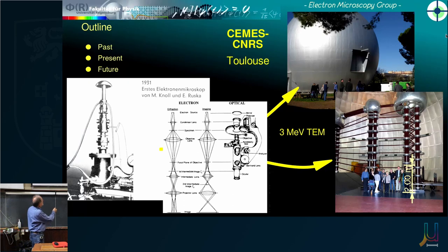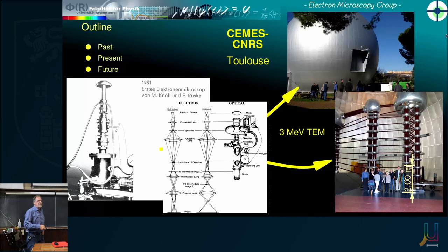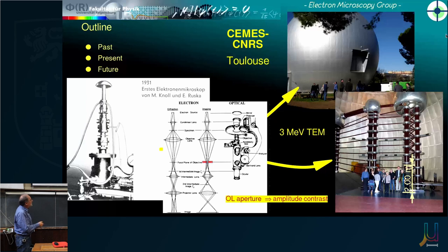One such three-megavolt microscope is in Toulouse at the CNRS. Inside this big ball — which you can scale using the persons standing around, including Peter Nellist from Oxford who is exactly two meters tall — is the high voltage generation. In the beginning, an electron microscope was treated like a light microscope but upside down: light source at top, condenser lens focuses onto the specimen, objective lens forms a diffraction pattern, then multiple magnification steps. Cutting out diffracted beams with an aperture gives amplitude contrast — areas with more diffraction become darker.